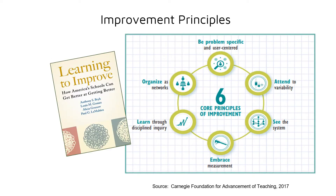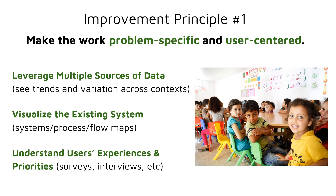Next, let's explore the improvement science principles and processes we use in our NICs. The first improvement principle is to make the work problem-specific and user-centered. This entails leveraging multiple sources of data, visualizing the existing system using systems, processes, and flow maps, and truly understanding user experiences — accomplished using surveys, empathy interviews, and student journey maps.